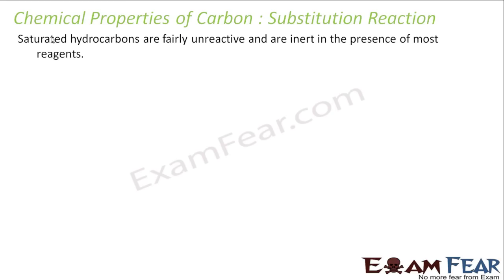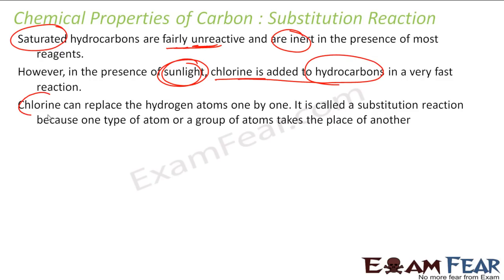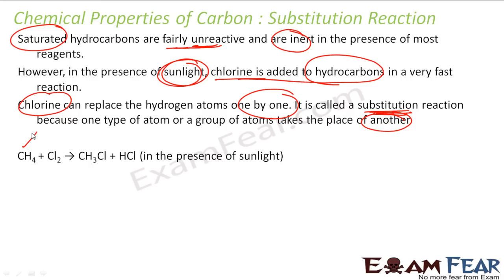The last property is substitution reaction. Saturated hydrocarbons are fairly unreactive and inert generally, but in the presence of sunlight — which acts as the catalyst here — chlorine is added to hydrocarbons very fast. Chlorine can replace hydrogen one by one. This is called substitution reaction because one type of atom replaces another — chlorine is substituting hydrogen.